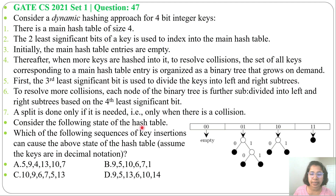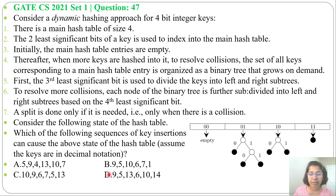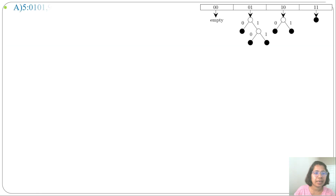Consider the following state of the hash table. The question asks: which of the following sequences of key inserts can cause the above state of the hash table? Assume the keys are in decimal notation. There are four options, each giving a different sequence of keys.